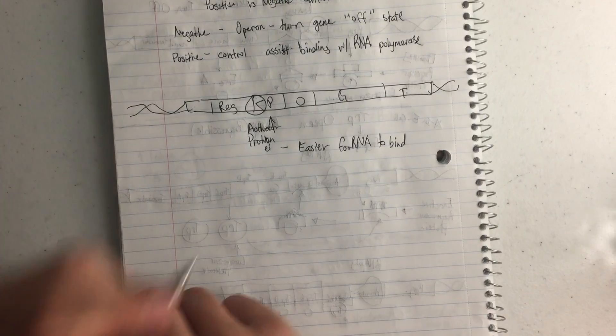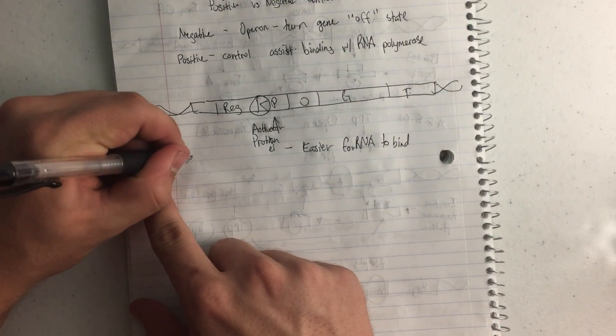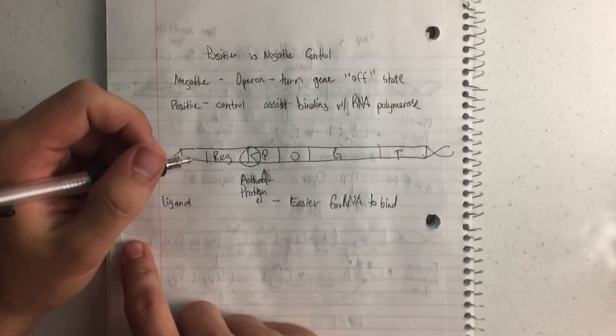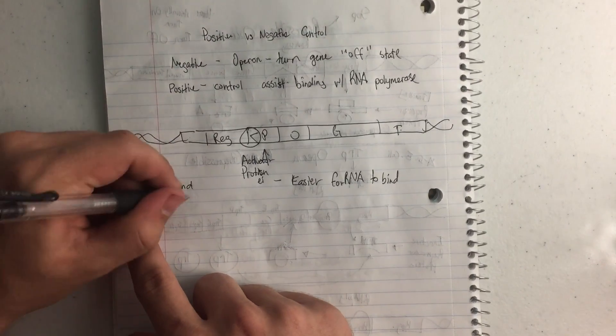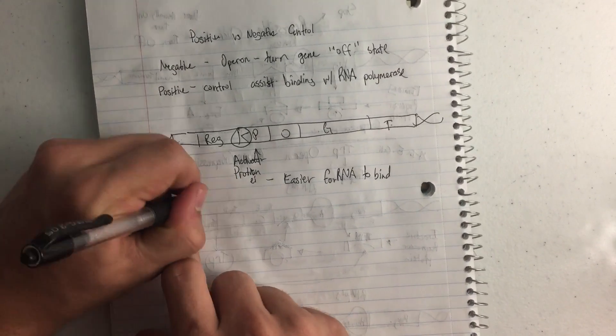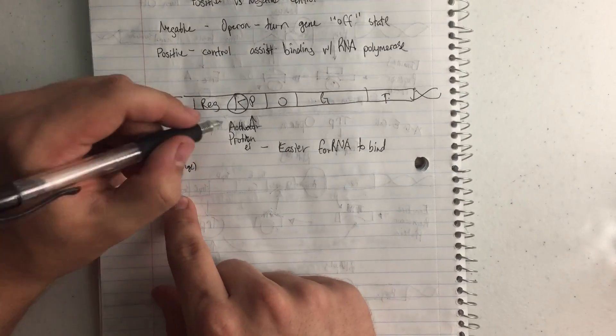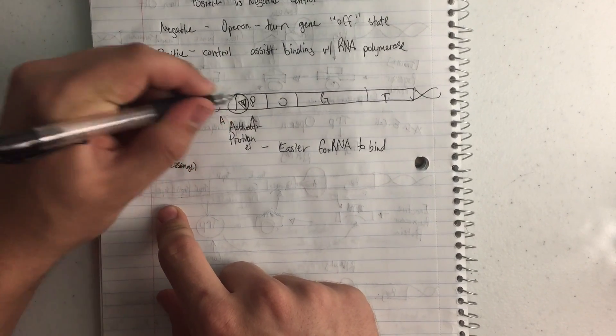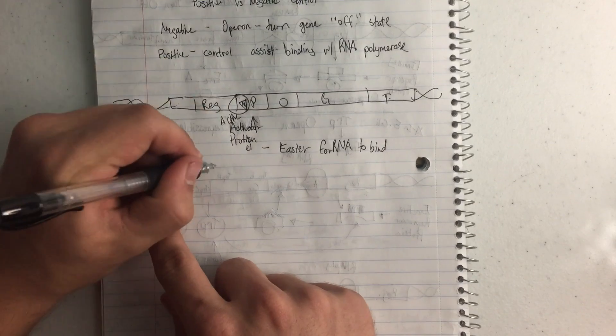And what's going to happen is, you have a ligand. A ligand is this messenger molecule. So we have an inactive activator protein. This one would be active, and you have an inactive.